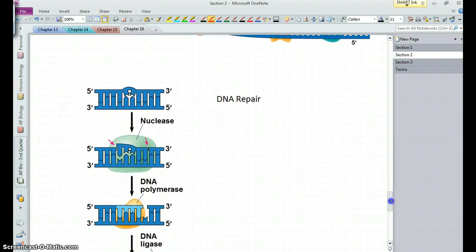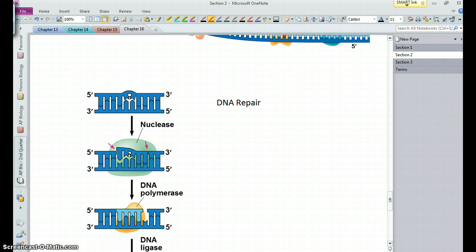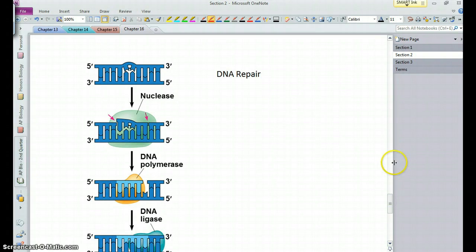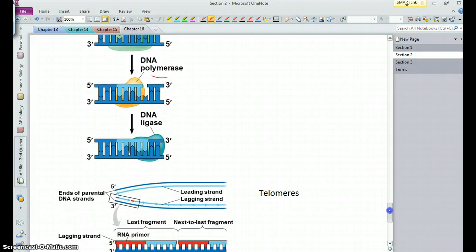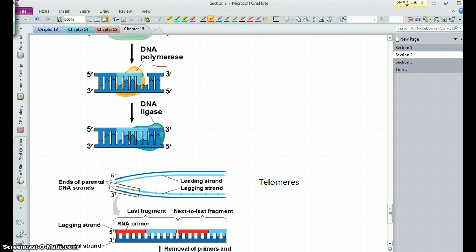Now, sometimes mistakes are made in DNA replication, and so what happens is there's a proofreading that goes on. Nucleases remove the problematic bases, DNA polymerase comes in and replaces them, and ligase bonds them together. So there is a repair mechanism that hopefully removes most or all mistakes.